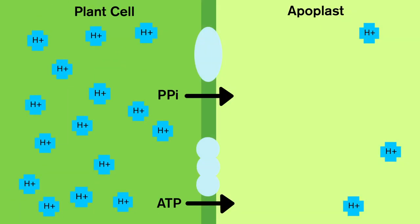Let's take a closer look at a plant cell. As you can see, the two pumps are moving hydrogen from inside the plant cell, through the membrane, to the outside of the cell called the apoplast.